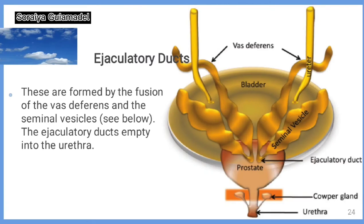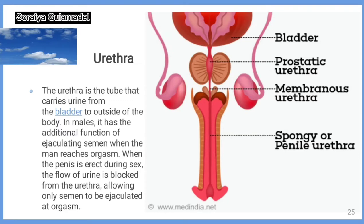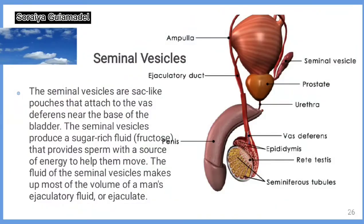Ejaculatory ducts. These are formed by the fusion of the vas deferens and the seminal vesicles. The ejaculatory ducts empty into the urethra. Urethra. The urethra is the tube that carries urine from the bladder to outside of the body. In males, it has the additional function of ejaculating semen when the man reaches orgasm. When the penis is erect during sex, the flow of urine is blocked from the urethra, allowing only semen to be ejaculated at orgasm.